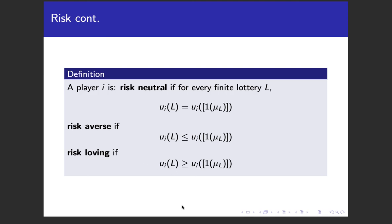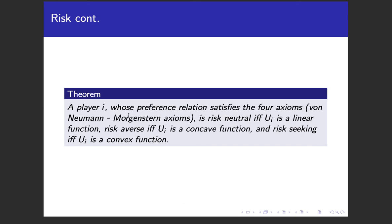There's a nice geometric interpretation: a player is risk neutral if the utility function is linear, risk averse if it's concave, and risk loving or risk seeking if it's convex. This was a quick introduction to some utility theory concepts, and hopefully more content on game theory using these ideas will follow. Thanks for watching.